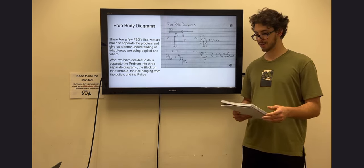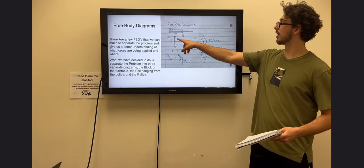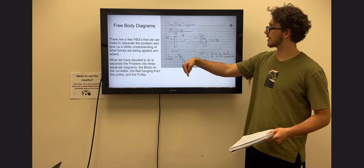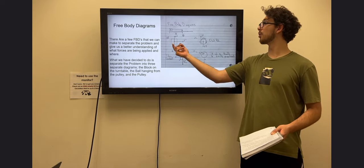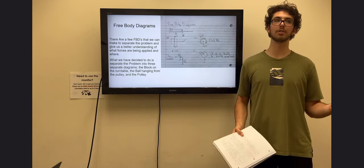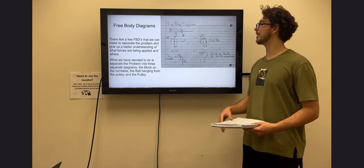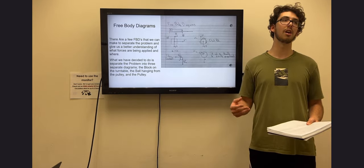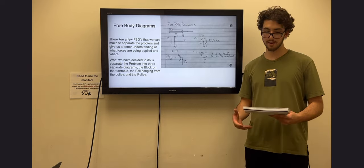There should only be three forces acting on the block, two of which cancel each other out: the gravitational force pointing downward and the normal force acting on the block by the turntable. And then the force of tension, which is between the block and the string, getting pulled by the pulley.